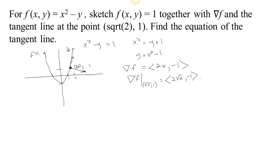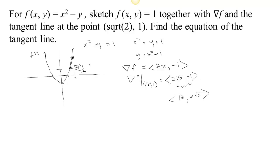To find the equation of the tangent line, we need a vector that goes in the direction of that tangent line. We know the tangent to this curve is perpendicular to the gradient. When we have a vector in two dimensions, it's easy to make something perpendicular — you just switch the two components and change the sign on one of them. So if we switch the components and change the sign on -1 to 1, we get a vector (1, 2√2) that's perpendicular to the gradient. Notice if you take the dot product, you get 2√2 - 2√2 = 0. So this is a vector in the direction of the tangent.